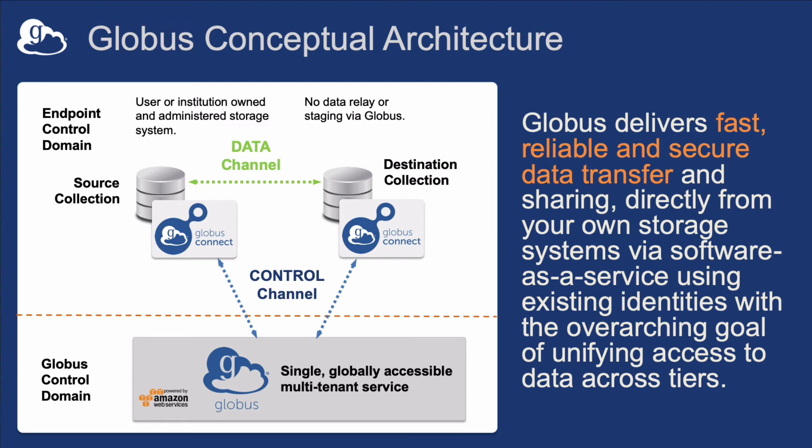All Globus transfers occur between a source and destination collection. The transfer of files and directories happens via a dedicated data channel — a direct connection between the source and destination collections. The data does not flow through the Globus cloud service, nor is there a need for a data relay or staging transfer. With Globus, you can avoid the commonly used two-hop transfer, where data is first pushed up to cloud-hosted storage and then pulled back down. Not only can Globus effectively cut your overall transfer times in half, you can avoid prohibitively expensive tertiary storage costs for the transfer of large datasets.